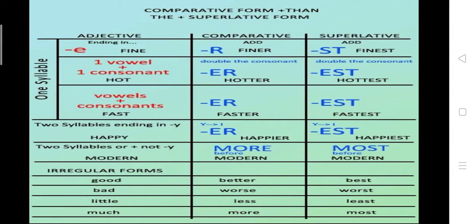Now, how to count the syllables. Suppose the word 'modern' — MO-DERN — that is two syllables. How to count the vowel sounds: if there is no obstruction in the passage of air when uttering the alphabet or sound, then it is a vowel sound. So we count the number of syllables: if there are two syllables ending in Y, Y turns into I; otherwise if not ending in Y, we add 'more' and 'most'.